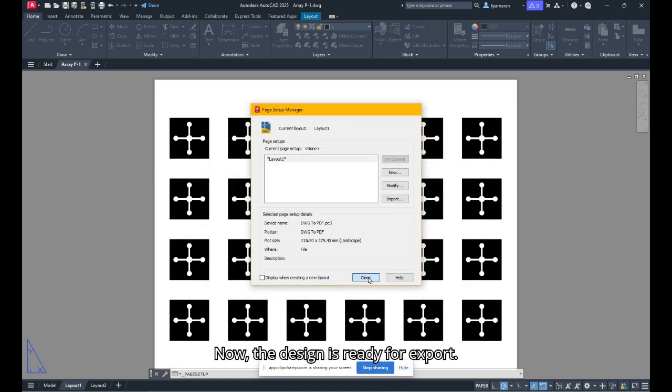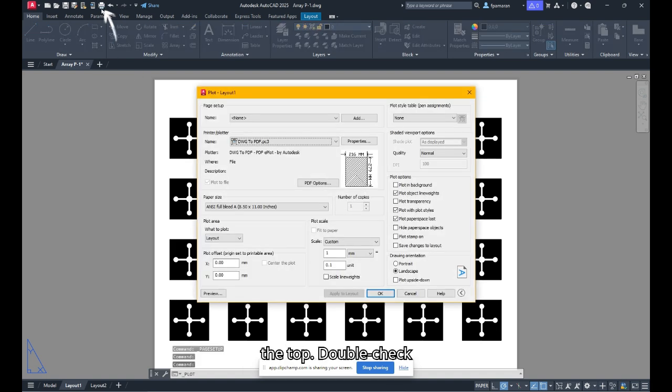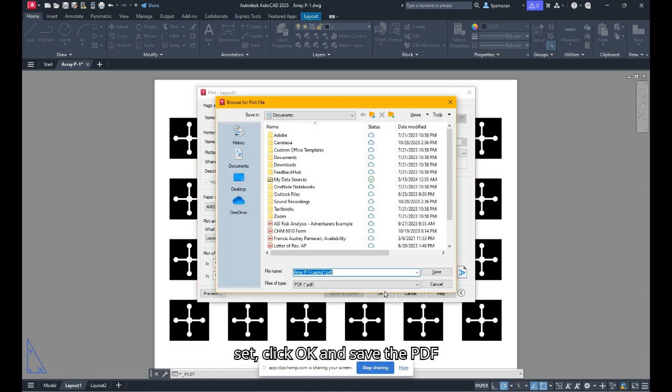Now, the design is ready for export. To do so, click on the printer icon at the top. Double-check all of the settings. Once everything is set, click OK and save the PDF file.